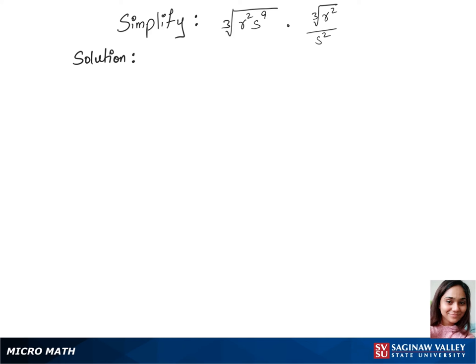Let's simplify this question. We'll first multiply the numerator part. So that's cubic root of r² times r², so that's r⁴ times s⁹ over s².